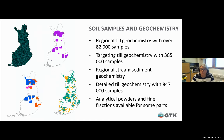We have soil samples and geochemistry data. Regional till geochemistry covers the whole country and contains over 80,000 samples. We also have targeting till geochemistry and stream sediment geochemistry. Detailed samplings include about 850,000 samples, with some analytical powders and fine fractions available for parts of the country for re-assaying.